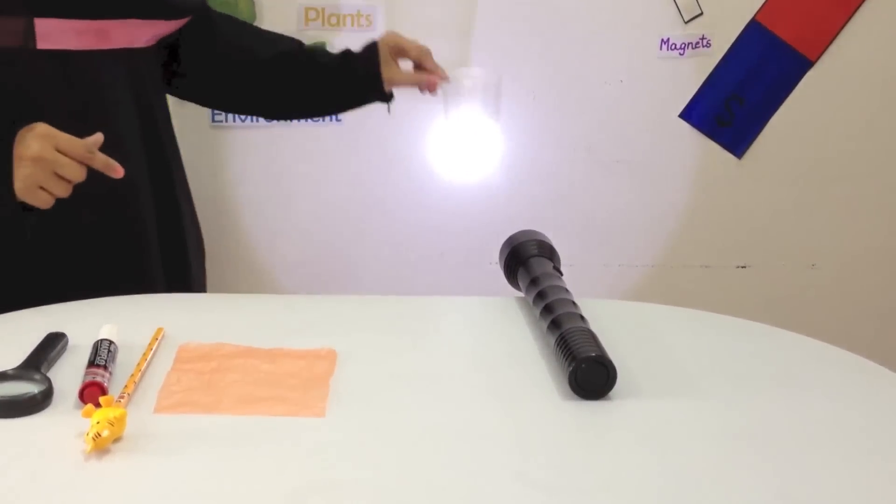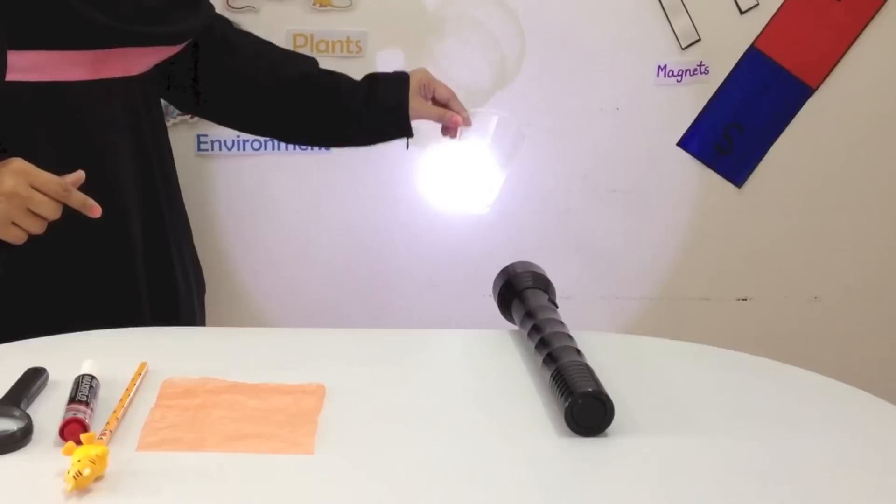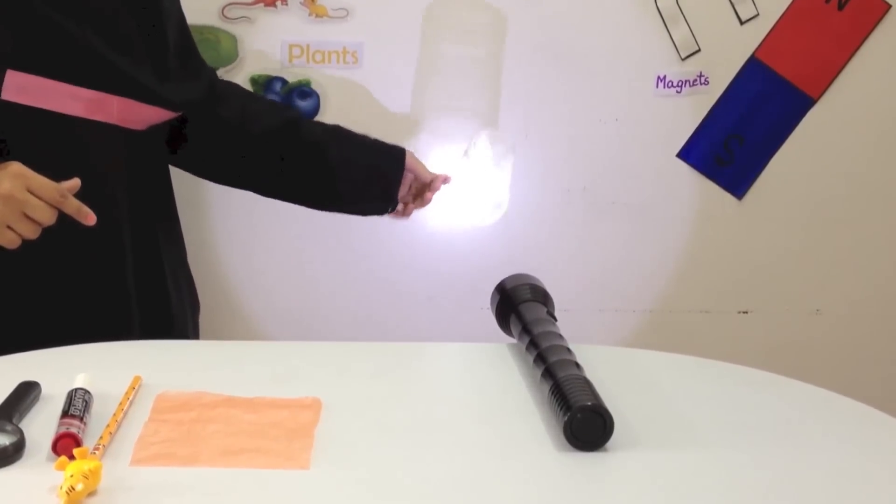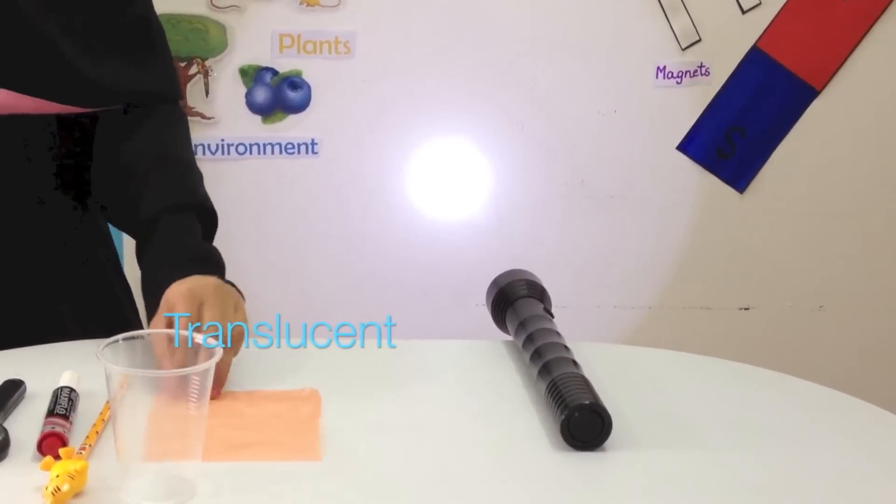Now, I have a plastic glass and we can see that it lets light pass through it. Not completely, not very clearly, but partially, yes. So, it can be called as a translucent object.